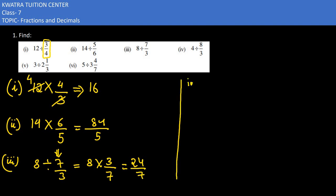Now in the fourth one, what do we have? 4 divided by 8 by 3. How will we simplify? Division sign will get changed into multiplication sign. And you will get 3 by 8, because 8 by 3 reciprocal is 3 by 8. Now 4 and 8 cancel. You will get 2 in the denominator. So the answer is 3 by 2.